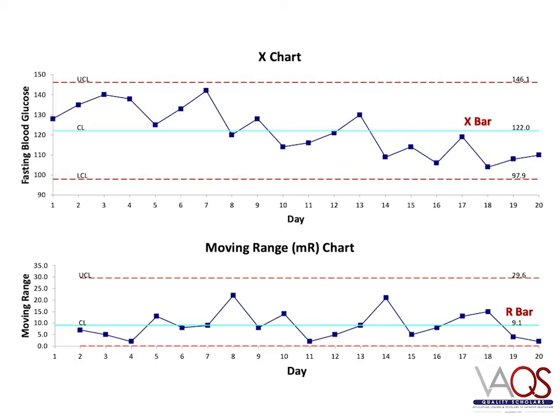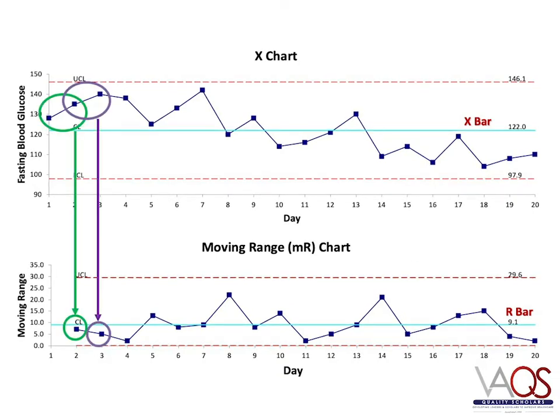This is an example of an XMR chart where the X chart plots the daily fasting glucose measure for a single patient. The x-axis is time — in this case, days — and the y-axis is the variable of interest. Patients measure their fasting glucose in the morning, which means that there is only one observation per day. The center line, designated as X bar on the chart, is the average of all of the fasting glucose measures. The upper and lower control limits are three sigma deviations from the center line. The moving range, or MR chart, is created from the absolute value of the difference between successive data points on the X chart. For example, the first point on the moving range chart is the absolute value of the difference between the first and second points on the X chart.